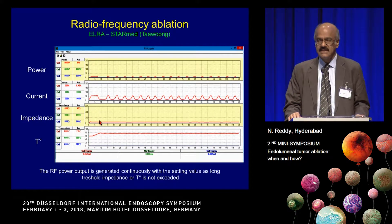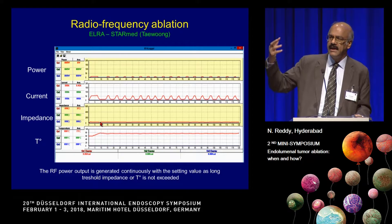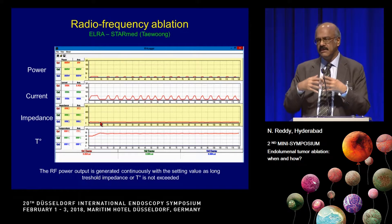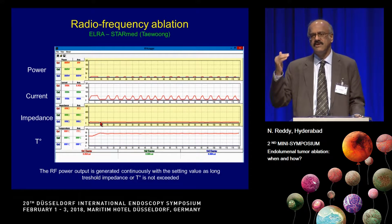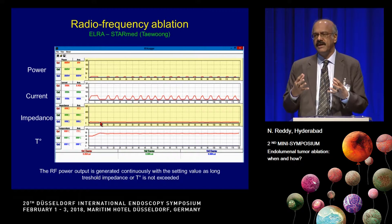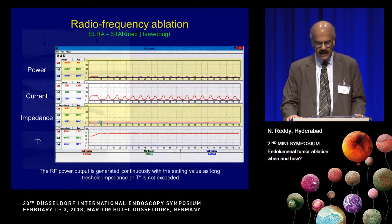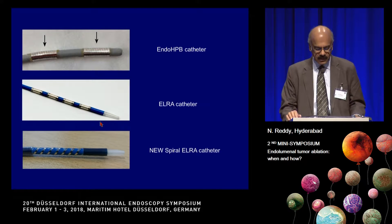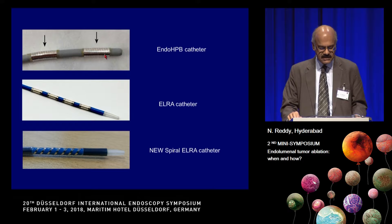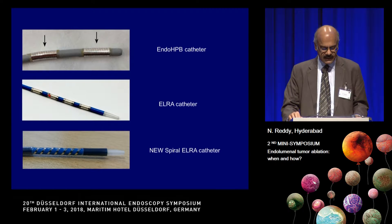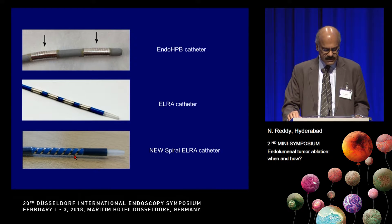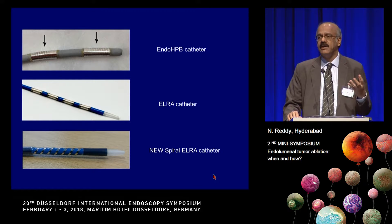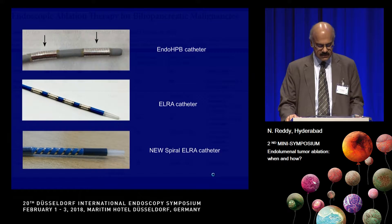The other important parameter is impedance, which we keep measuring constantly — if impedance goes high, the tissue is completely burnt and RFA efficacy falls. We need to maintain low impedance, a temperature of 75 to 80 degrees, and a two-minute period to produce effective RFA. There are now three catheter types: the standard Habib catheter, the newer ELRA catheter, and the spiral catheter. Experimental evidence suggests that spiral electrodes give much better ablation than standard round electrodes.